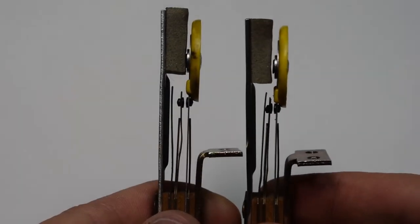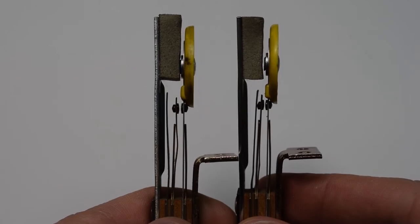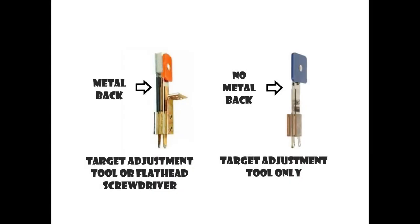Here you can see the two targets I adjusted side by side. While I prefer to use the flathead screwdriver to gap the stand-up targets, you can only do this if there is a metal bracket for leverage at the back of the stand-up target.